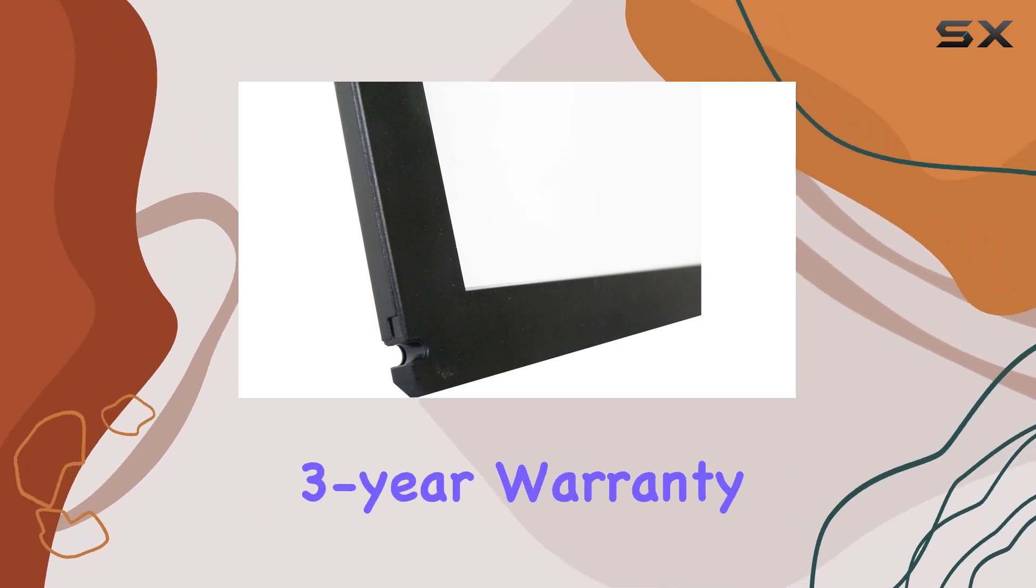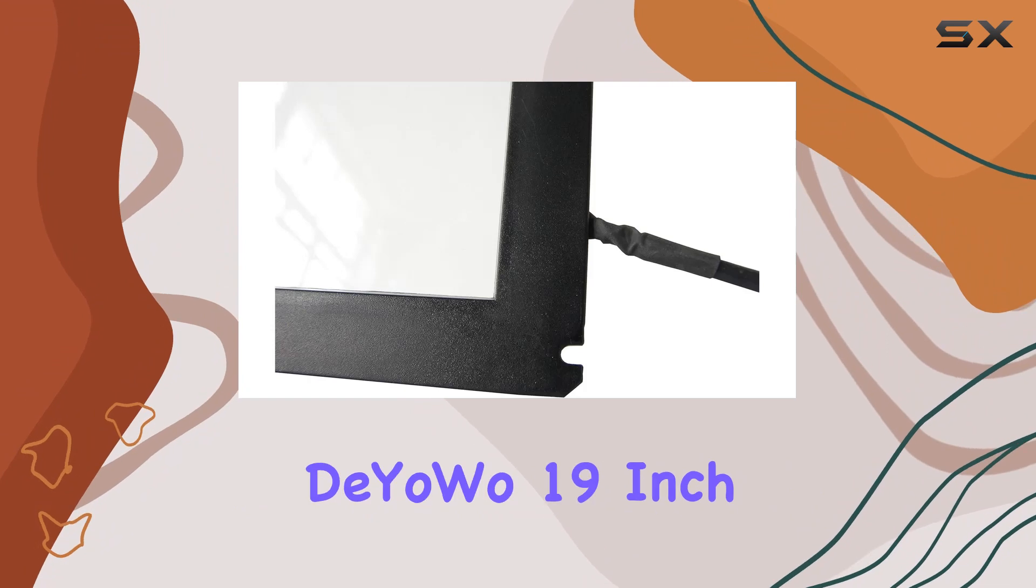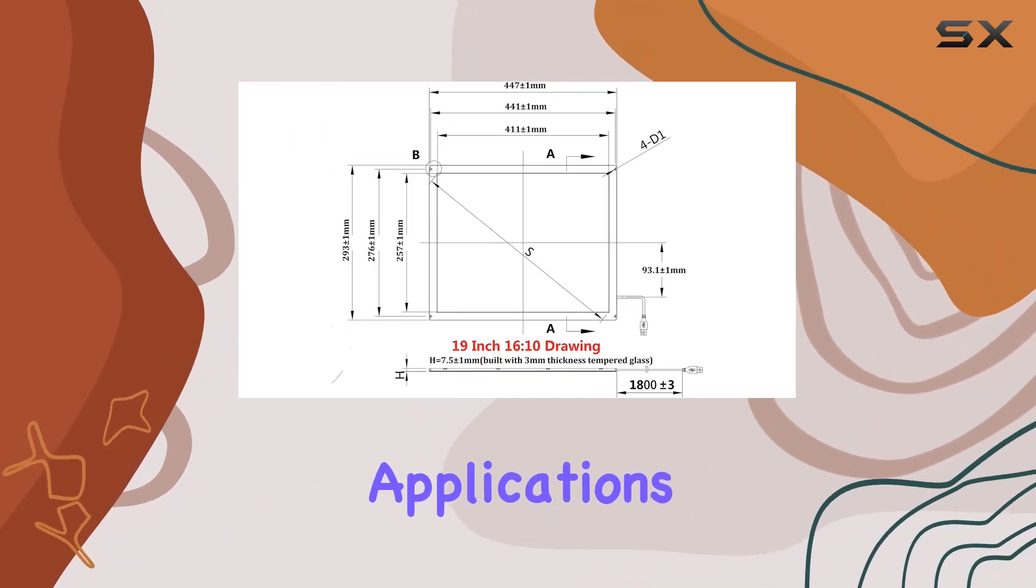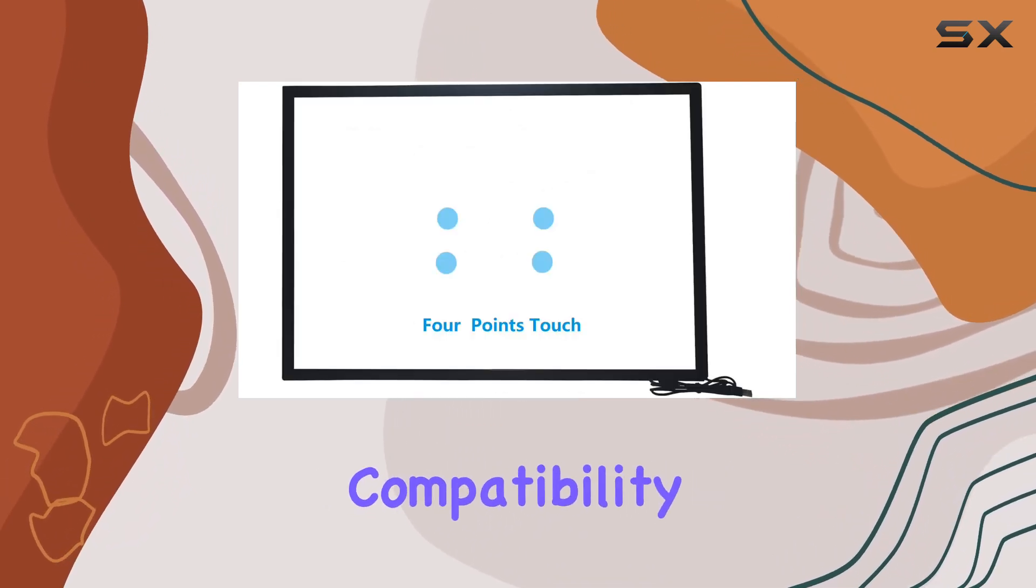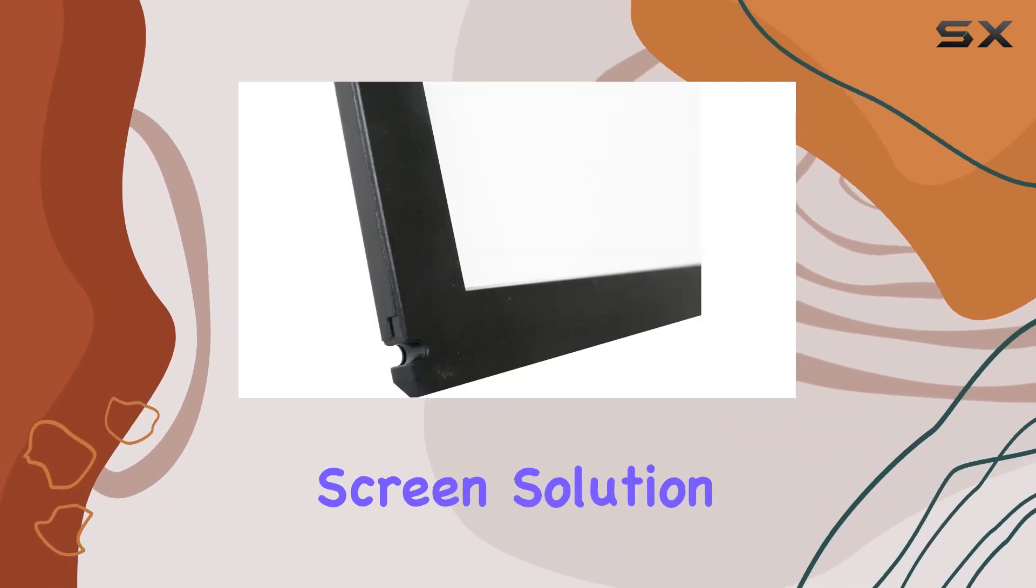Diowa backs this product with a solid 3-year warranty, emphasizing its reliability. In summary, the Diowa 19-inch IR touchscreen is a robust solution for interactive applications. Its seamless touch response, anti-vandal glass, and broad compatibility make it a compelling choice for those in need of a reliable and durable touchscreen solution.